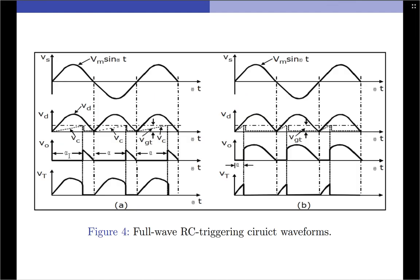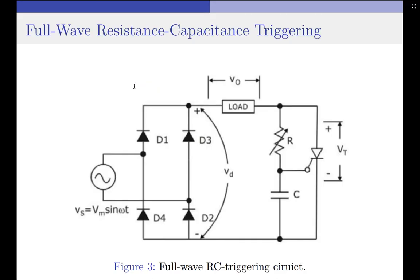Finally, to note that this circuit differs from the half wave RC circuit: there is in fact a load voltage waveform for the negative half cycle of the input supply also, because it is a full bridge. With that, I conclude the discussion on half wave as well as full wave RC triggering circuit. Thank you.